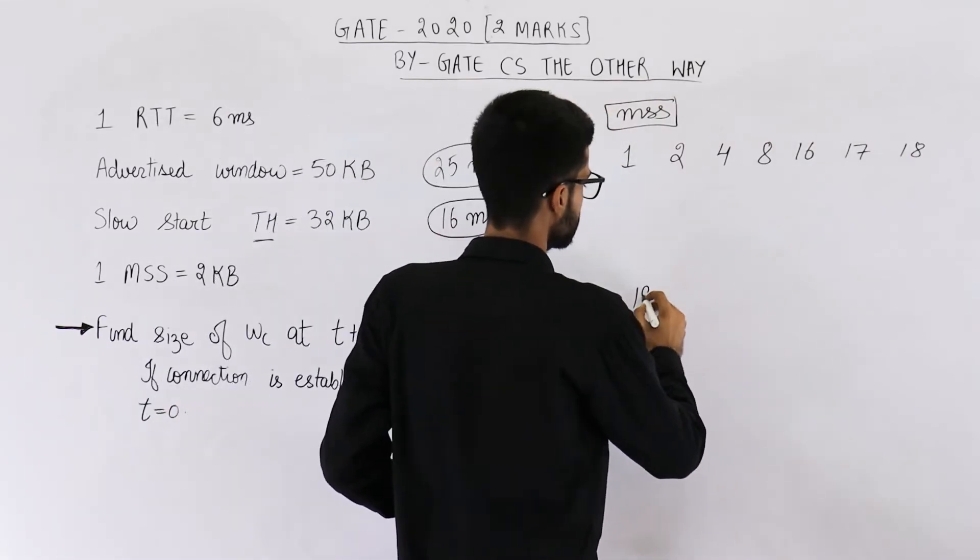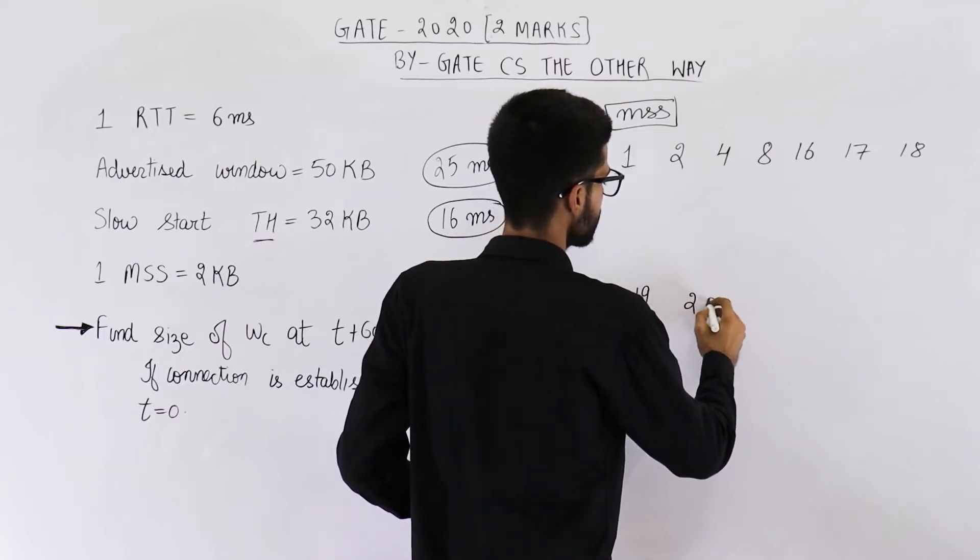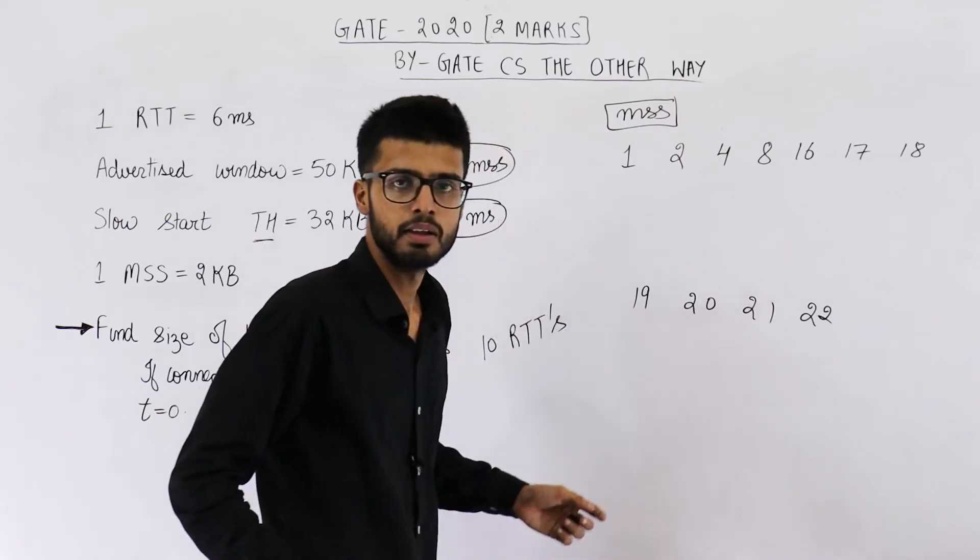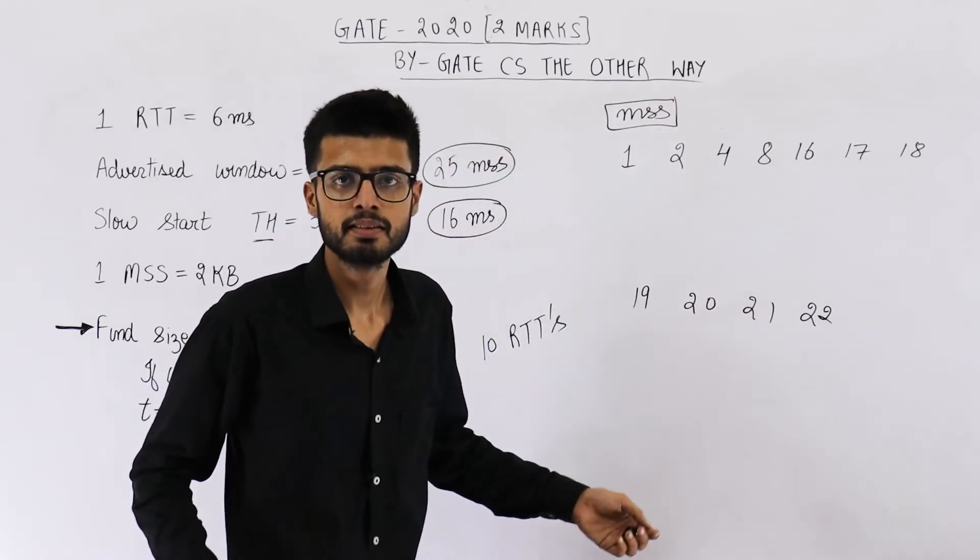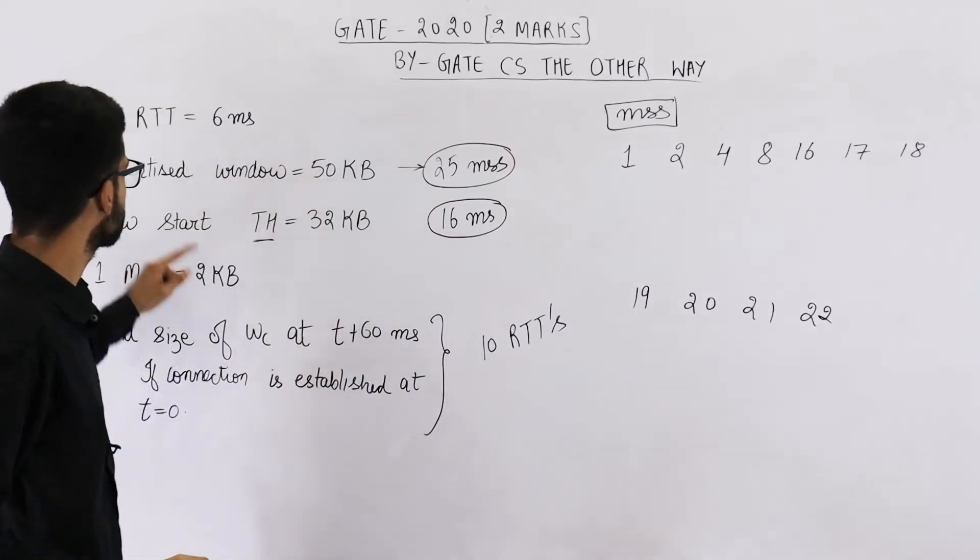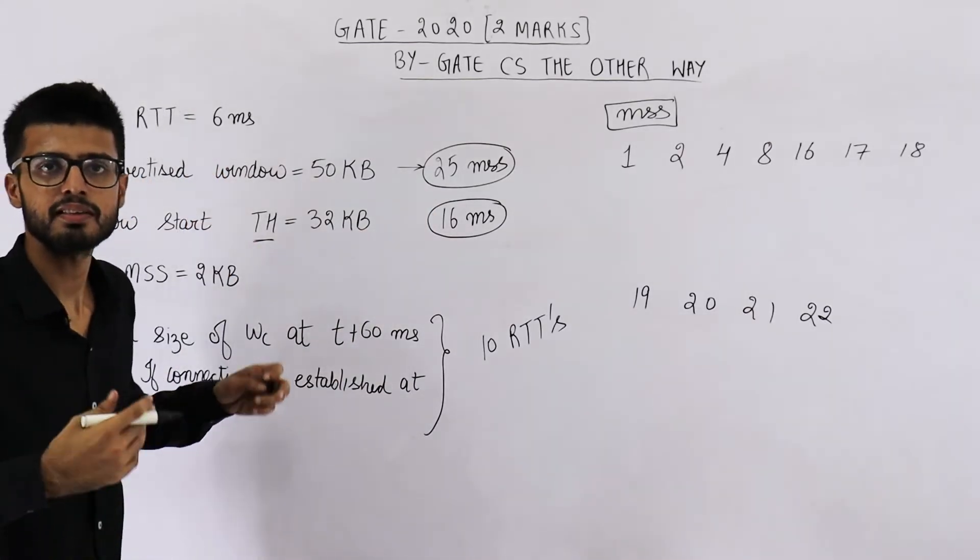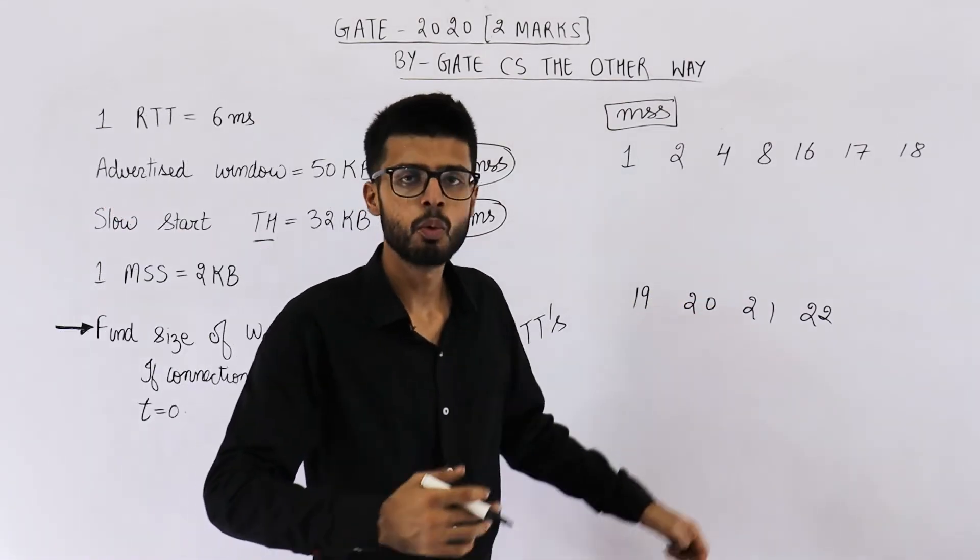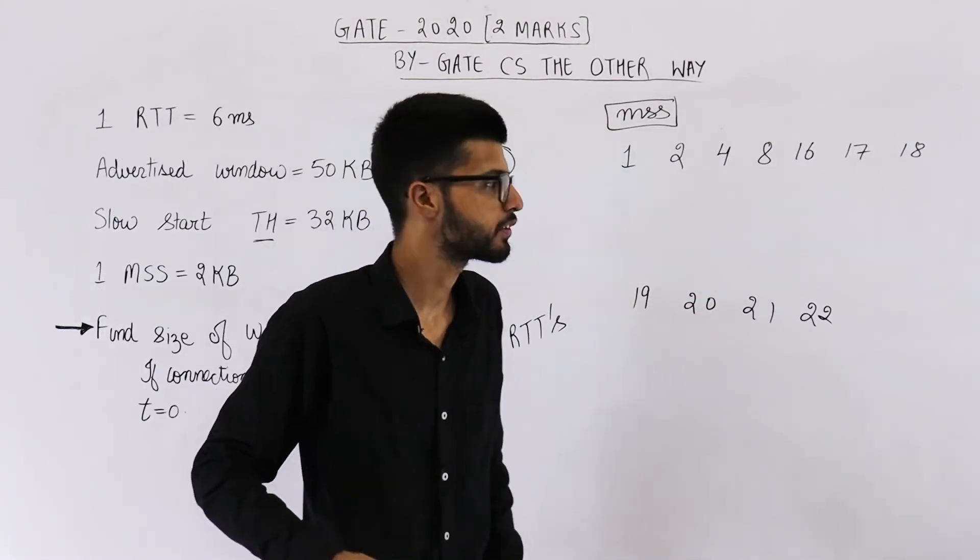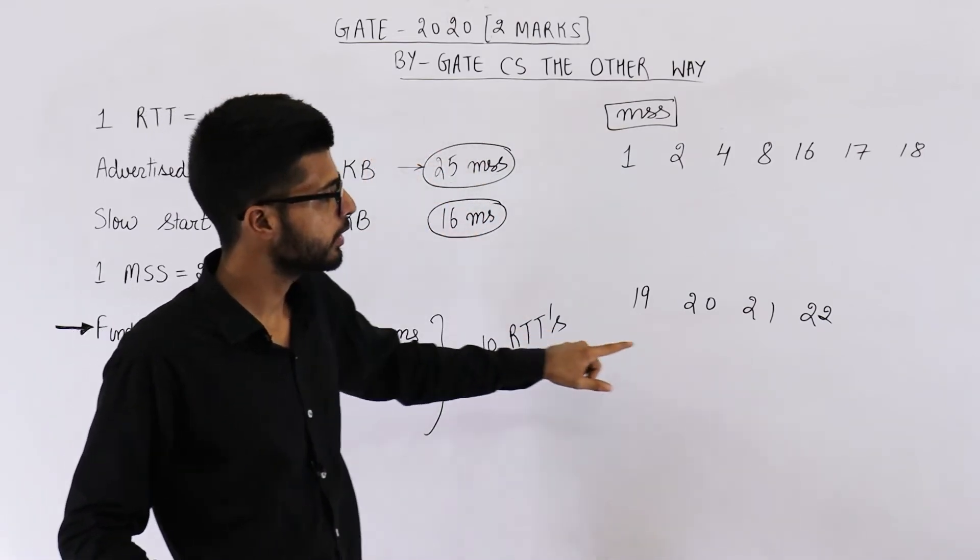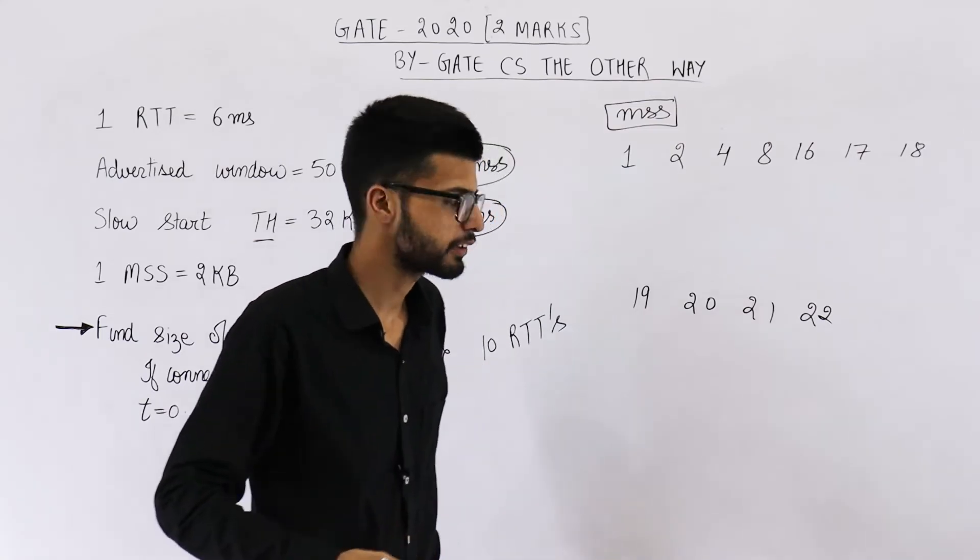Then it will be 19, then 20, then 21, then 22, so on. You can keep on increasing the size until you reach this value. Advertised window means what is the buffer available at receiver side. So you cannot send more than what receiver is capable of receiving. That means until we reach 25 MSS, we can keep on increasing this by 1 after every RTT.